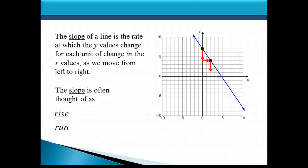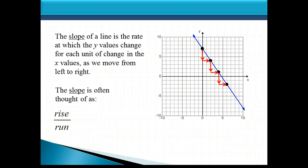If I do this again — going down three from that second point and right two units — I end up on the line again. I can do it another time, and yet another time, and I could keep doing this forever. So as I go from one point to another on the line, if I go down three and right two, I end up at another point on the line. This is what rise over run is all about — going up or down is the rise, and going left or right is the run.